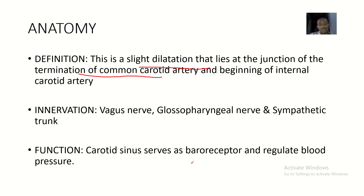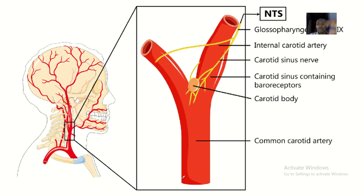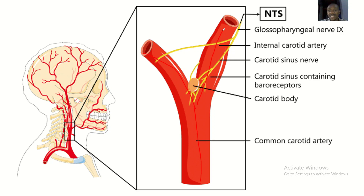The carotid sinus serves as a baroreceptor and regulates blood pressure. Blood pressure regulation is related to blood pH, oxygen level in the body, and carbon dioxide level in the body. Using this image to define the carotid sinus again: the common carotid artery bifurcates into the internal carotid artery and the external carotid artery, and here lies the carotid sinus, which contains baroreceptors.